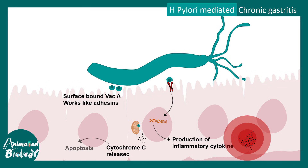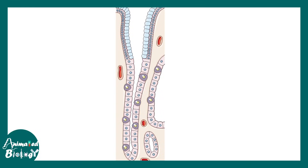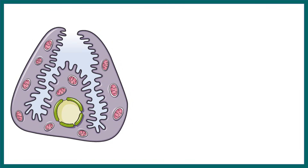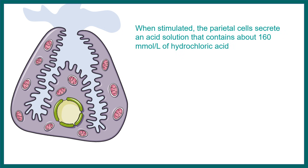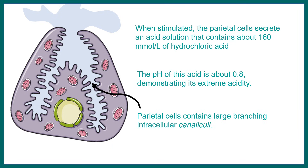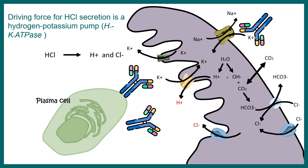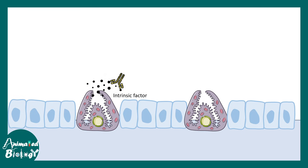In severe cases, cytochrome c release from mitochondria may trigger apoptosis. The stomach lining has different cell types: neck cells, parietal cells, and peptic cells. Parietal cells secrete HCl and contain intracellular canaliculi structures with ion channels and transporters. In autoimmune cases, plasma cells mistakenly make antibodies against these transporters, such as the sodium-potassium ion exchange ATPase, leading to autoimmune gastritis.